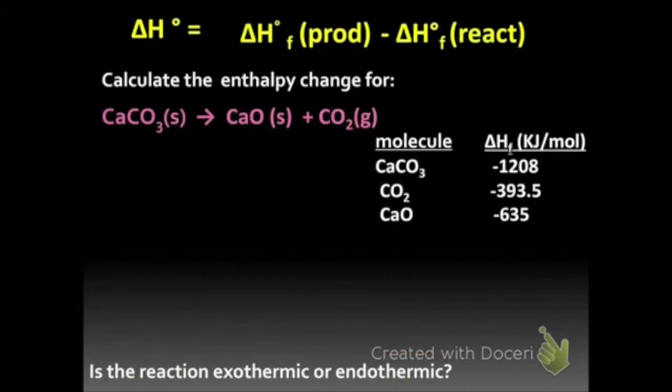We can also use that with a formula. So we can calculate the heat of formation or the total energy by adding up the products and reactants. And then once we take those numbers, we subtract them to get how much energy is either going in or coming out for the whole reaction. So that's the heat of reaction.